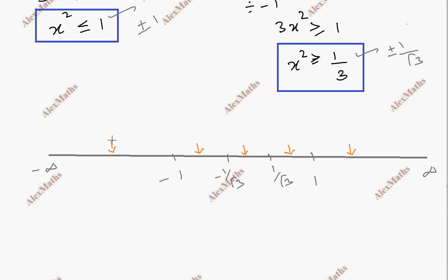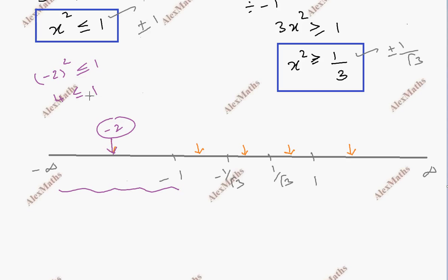For example, if I have x equal to minus 2: minus 2 whole squared is 4, and 4 is not less than or equal to 1. So this region is not true — x equals minus 2 does not satisfy the inequality.